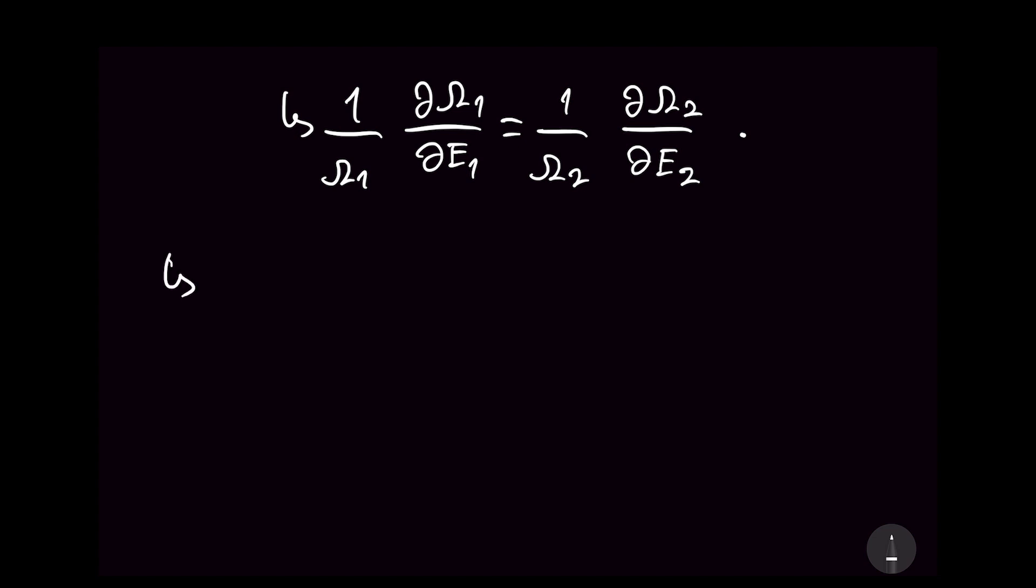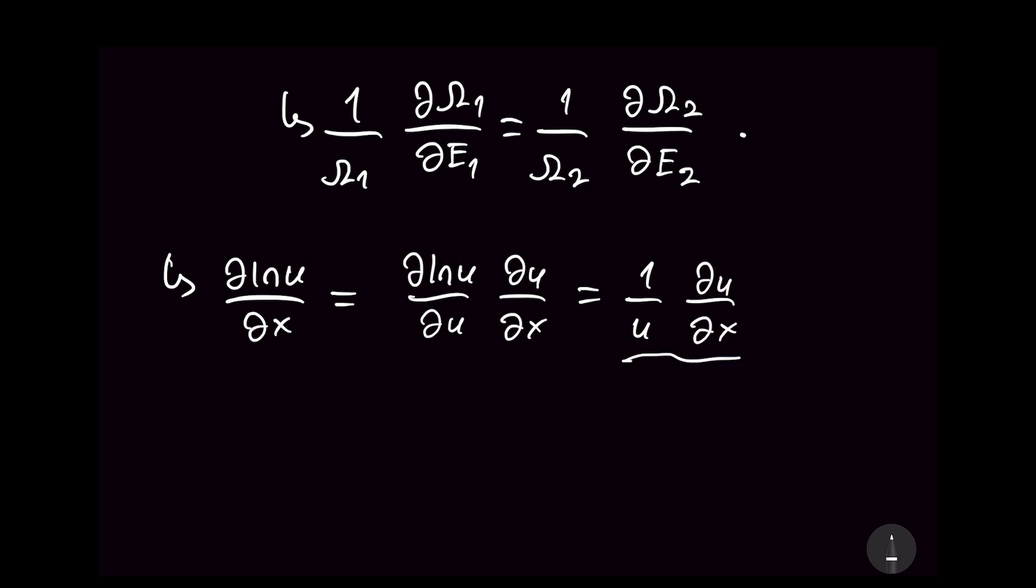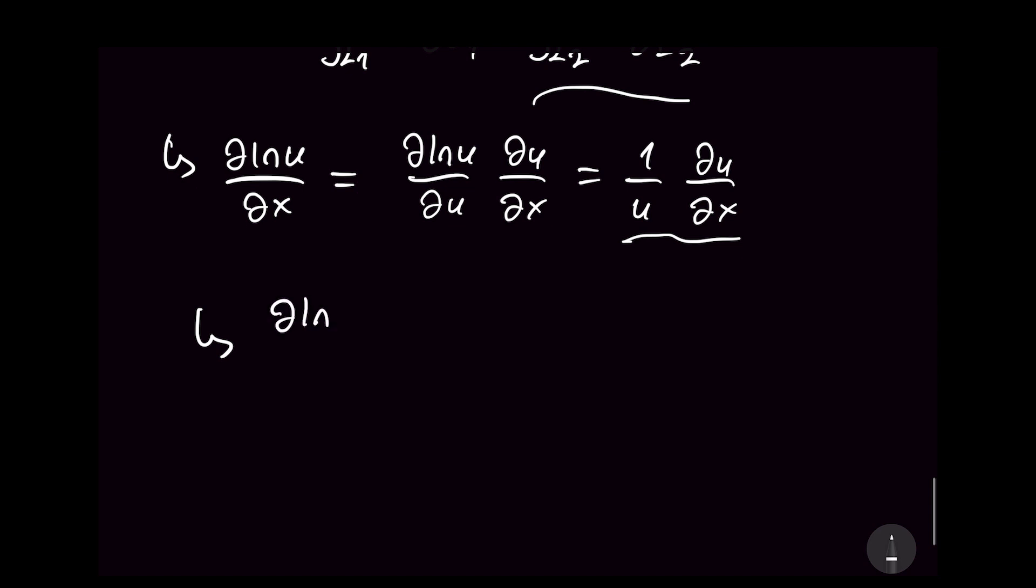Now another thing from differential equations that we can borrow is if you were to differentiate, say, an ln u with respect to x, you can just use a chain rule and say that this is ∂ln u with respect to u times ∂u with respect to x. So the derivative of ln u is 1 over u and then we have ∂u/∂x here. This looks just like what we have up here. So whenever you see the reciprocal of a function and then its derivative multiplied this way, you can just recognize that this is an ln function. So we can go ahead and rewrite this condition as ∂ln(omega_1)/∂E1 equals ∂ln(omega_2)/∂E2.